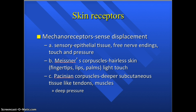Skin receptors are mechanoreceptors, and there are three types. First, free nerve endings are found in the epithelial tissue, between epithelial cells, and are responsible for the sensation of itching. Then there are tactile or Meissner's corpuscles, mostly found where you have hairless portions of your skin — fingertips, lips, palms, soles of your feet, nipples, external genitalia. These receptors are responsible for fine touch and determining the texture of objects, so you can distinguish between two points on your skin being touched at the same time.